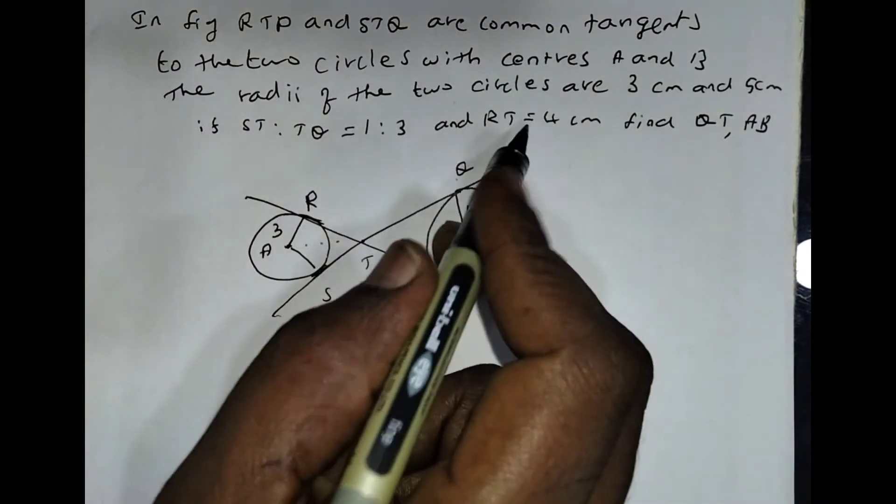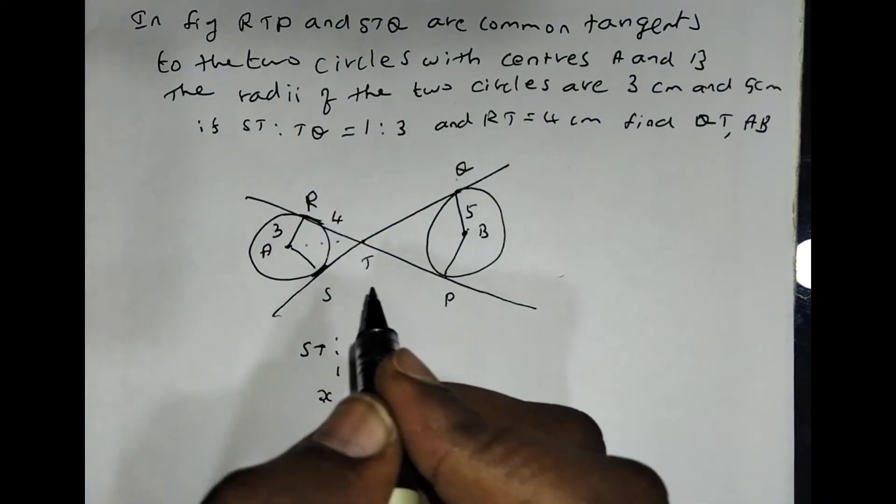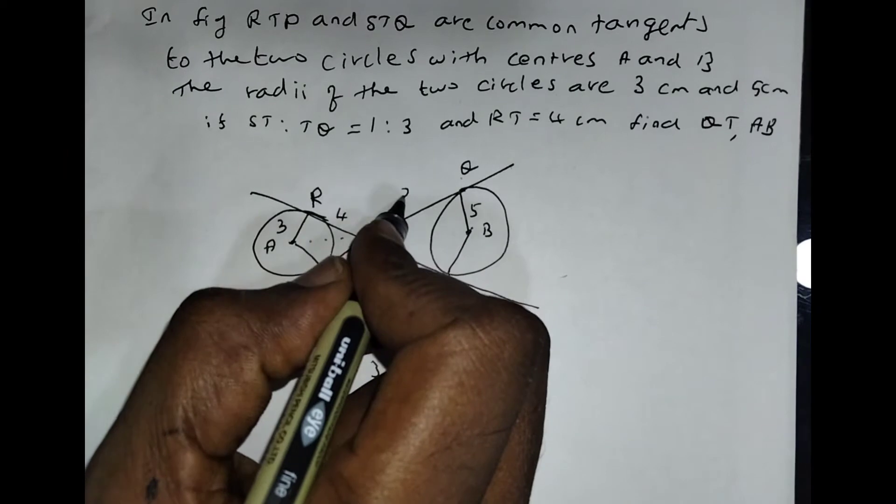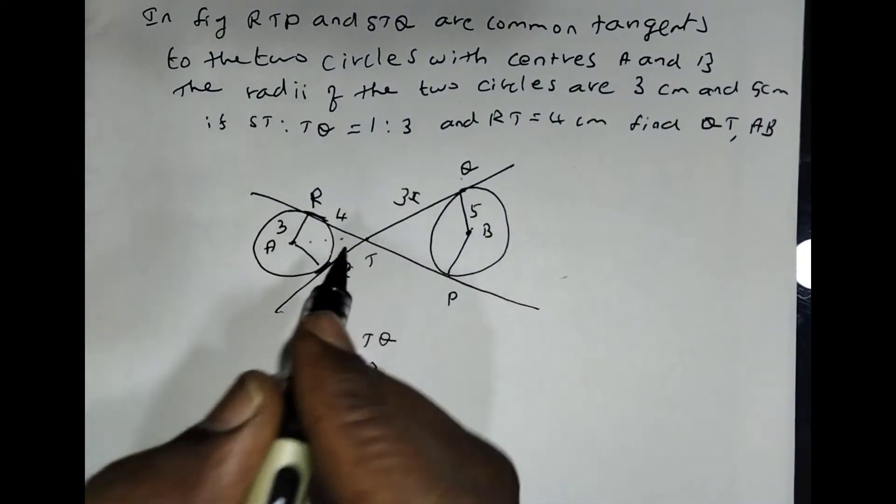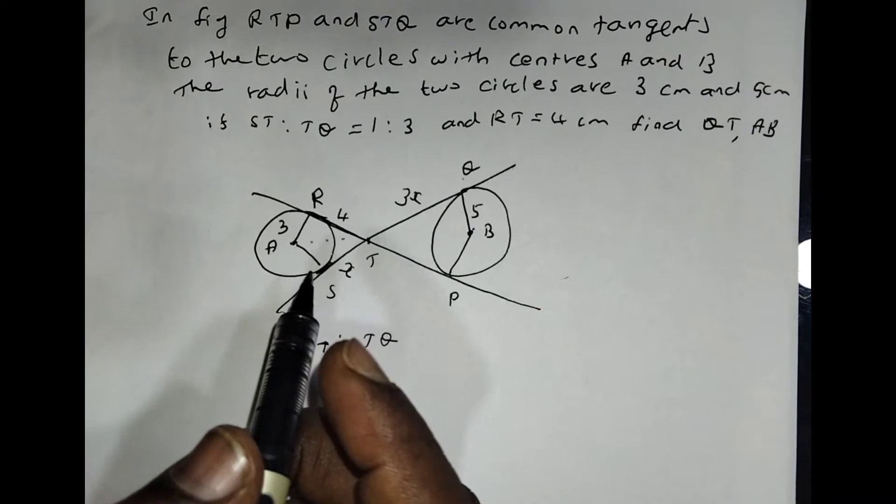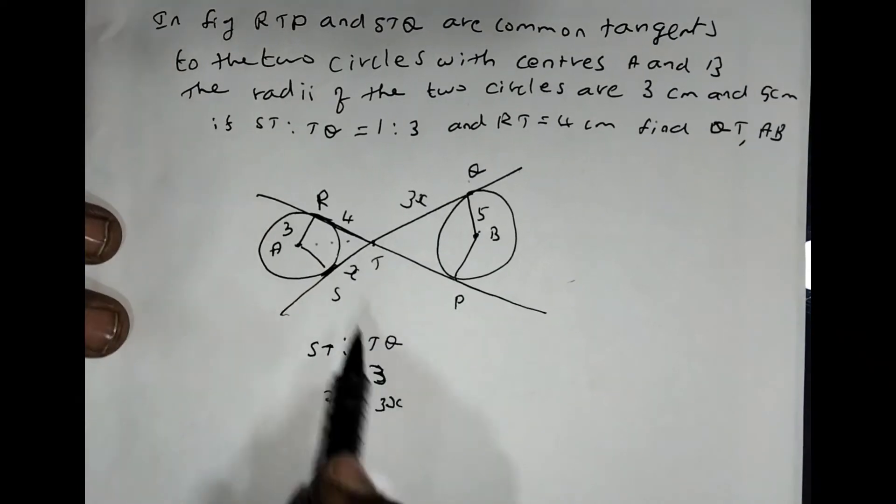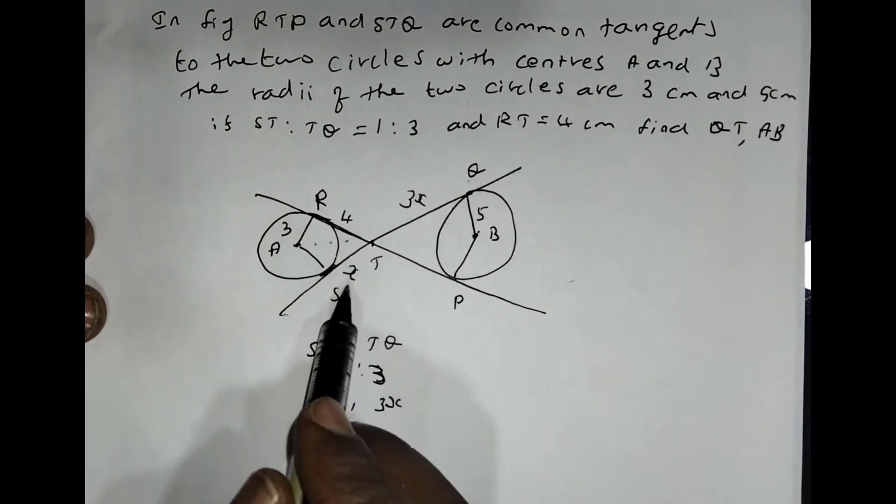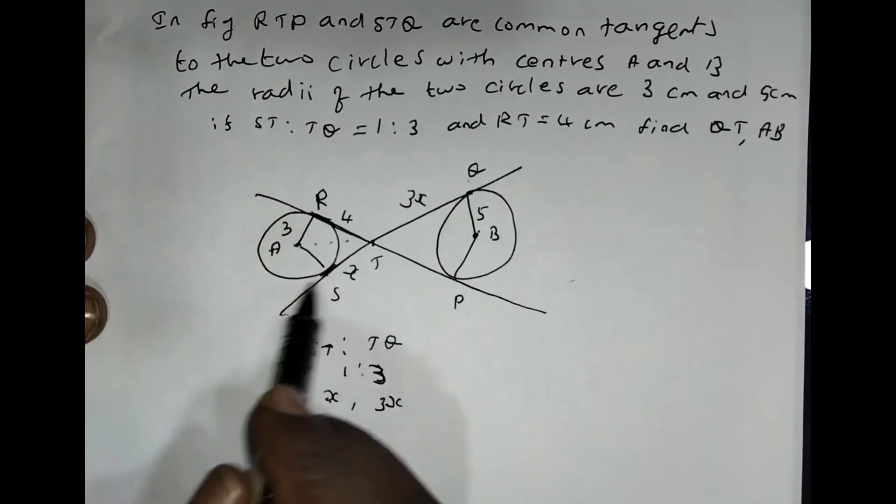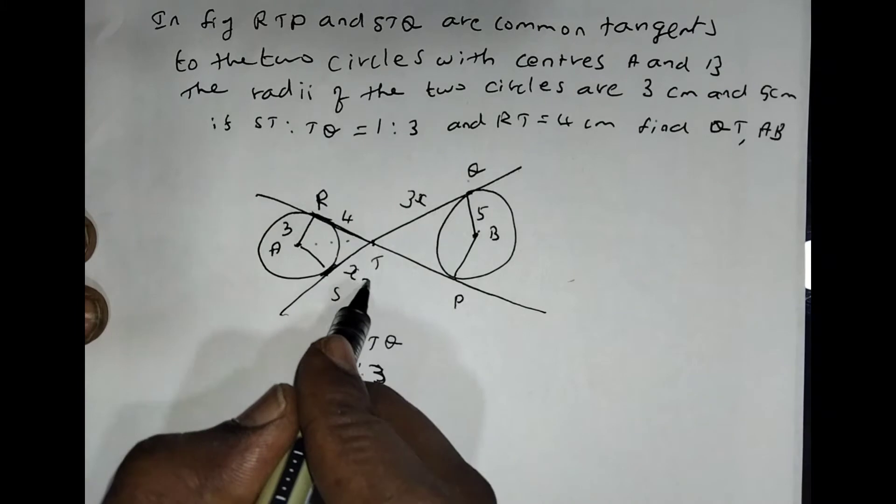At the same time they are given length of RT equal to 4cm. So if we take here X, then Q would become 3X. We know that length of tangents should be equal. So we know RT equals 4, then the length of RS and ST should be equal. Both are tangents to the same circle, so X equals 4.